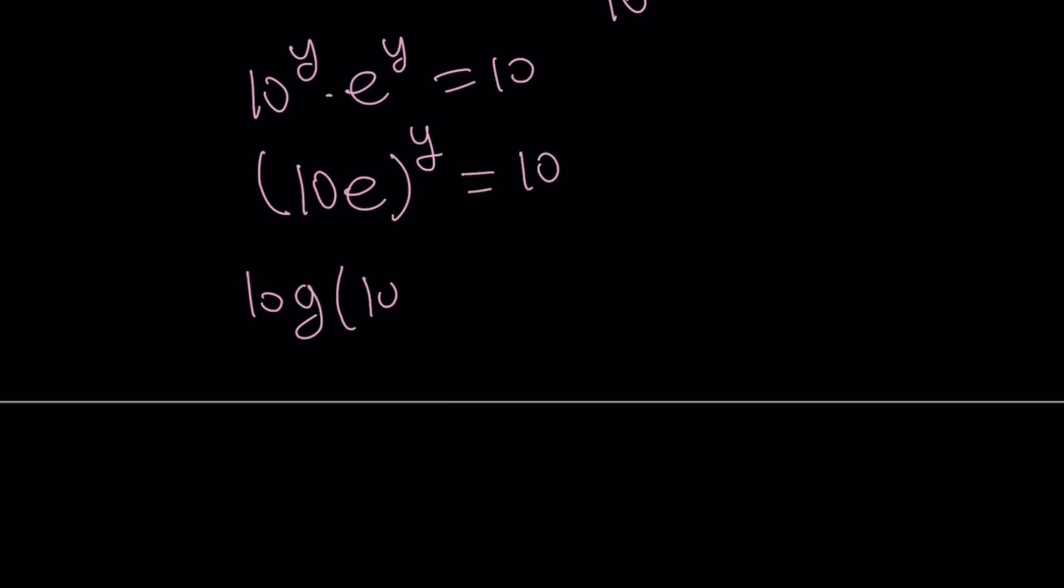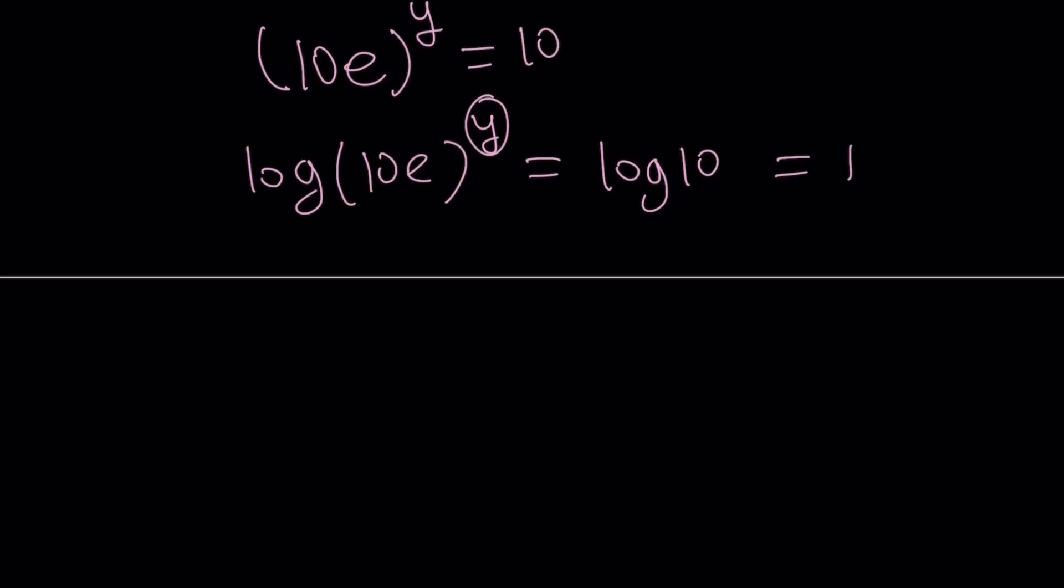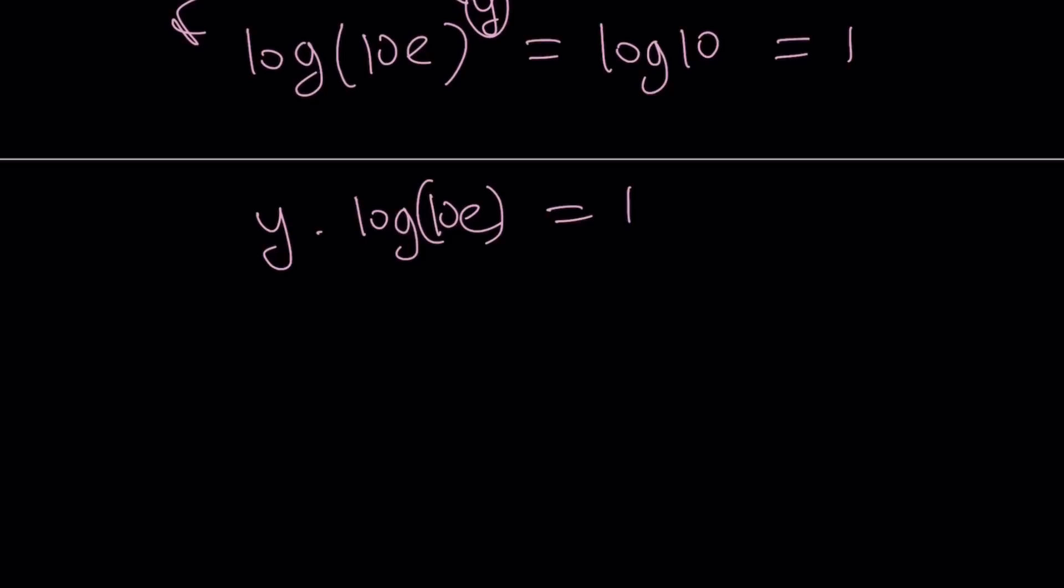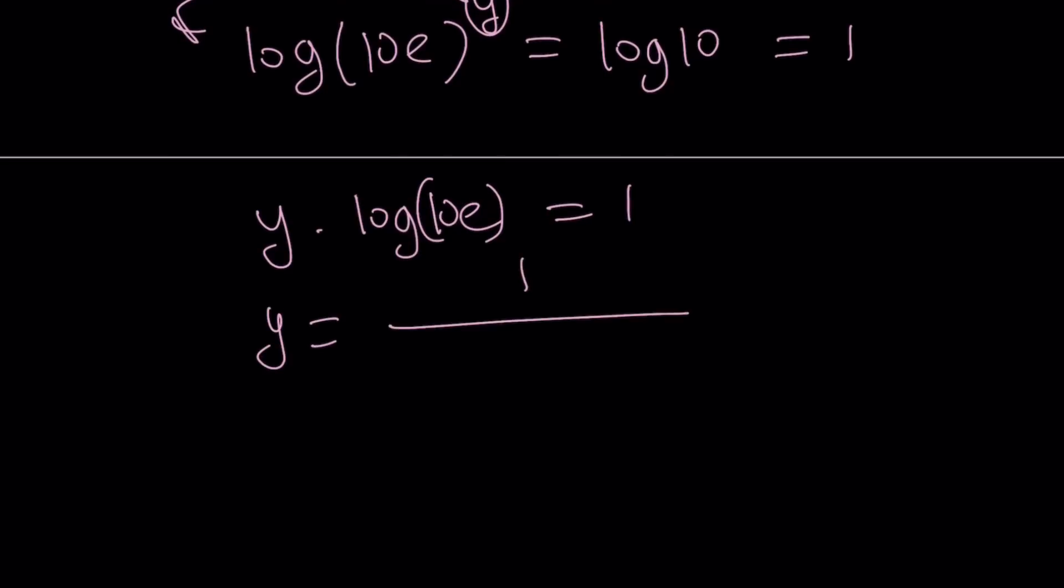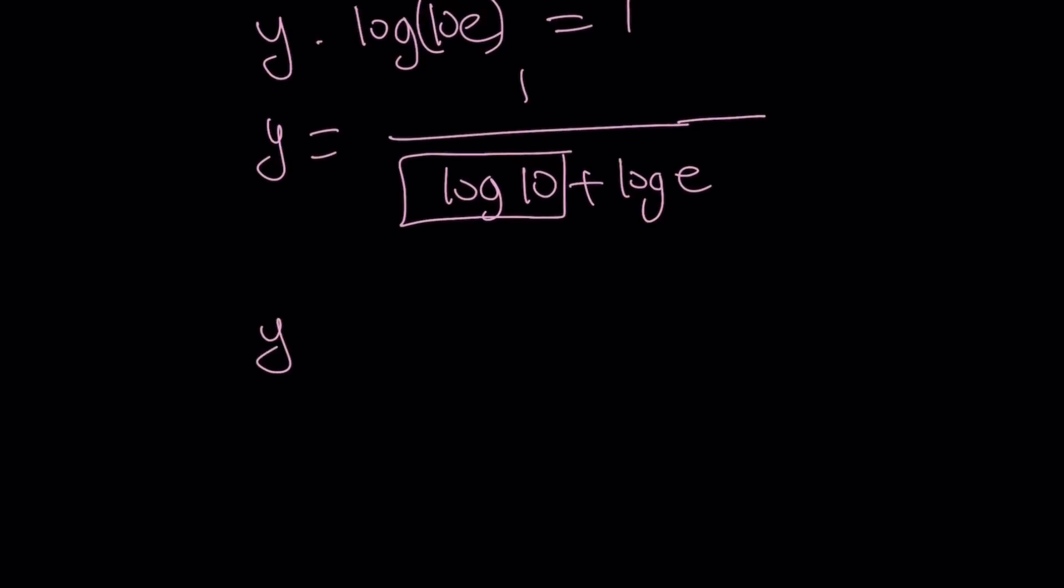And at this point, I can definitely ln both sides and try to solve for the solution. But let's go ahead and log both sides. Just for fun, because I'll show you something. When I log both sides, obviously, I get a 1 on the right-hand side, which is great. And I'm going to move the y to the front. From here, y times log 10 e becomes 1. And now, y can be written as 1 over log 10 e. But log 10 e can be written as log 10 plus log e. And log 10 is the same as 1.